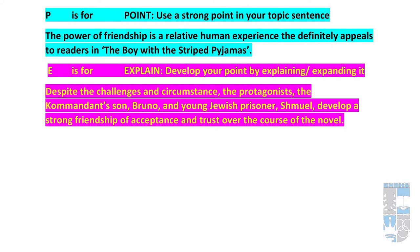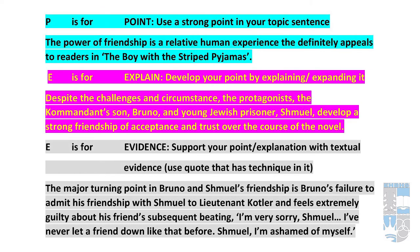Now we have to explain and expand on it — give further information about the power of friendship. Despite the challenges and circumstances, the protagonists — the commandant's son Bruno and young Jewish prisoner Shmuel — develop a strong friendship of acceptance and trust over the course of the novel. With this sentence we have expanded on our point, adding that there are challenges surrounding them, and yet Bruno and Shmuel are still able to accept and trust each other. Now we have to back up this point and explanation with evidence.